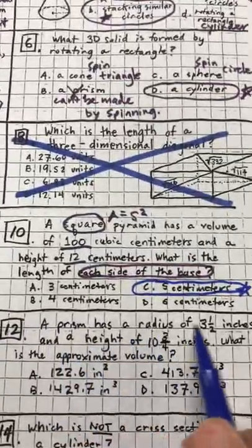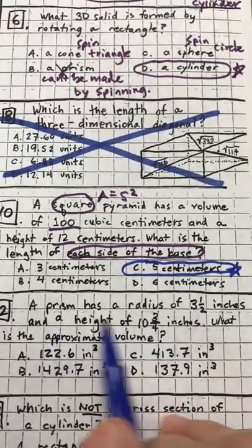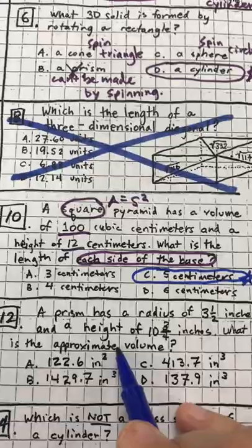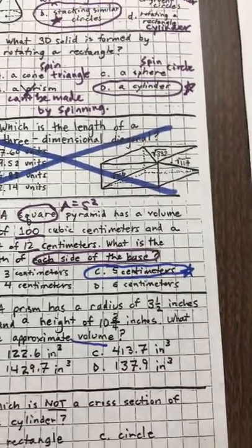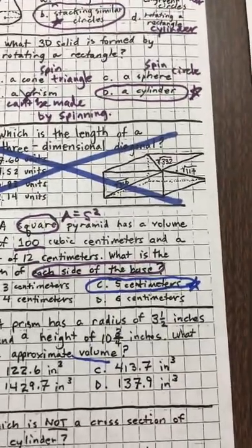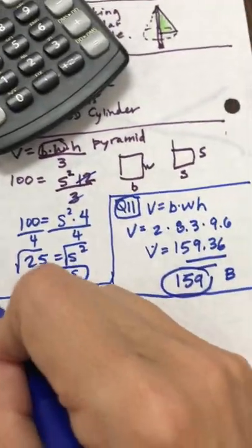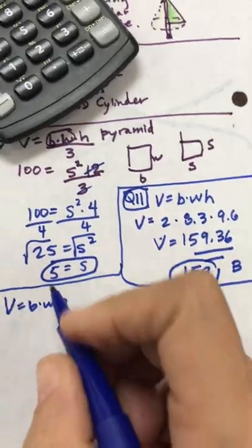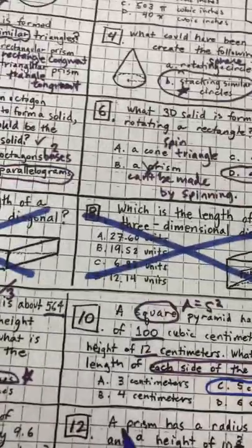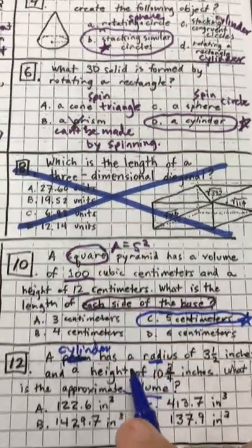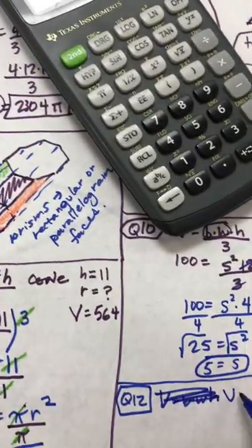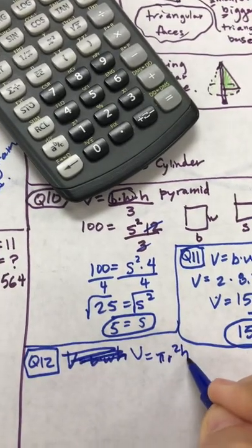Next question. A prism has a radius of 3 1/2, height of 10 3/4. What is the approximate volume? So it looks like my answer choices are in decimals. So it's going to be okay to change things into decimals. So question 12. A prism. So a prism is just base times width times height. Oh, I think this is a typo. This has to say the word cylinder. Because prisms don't have radiuses. So sorry about that. I think that that should say cylinder. So pi r squared h is a cylinder.